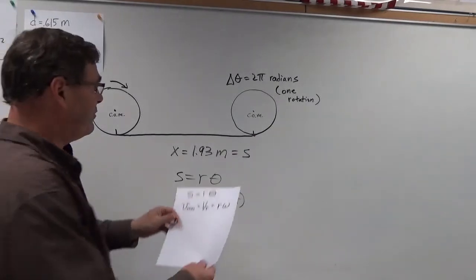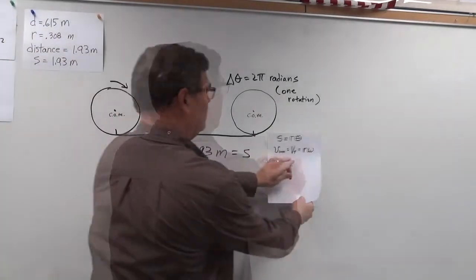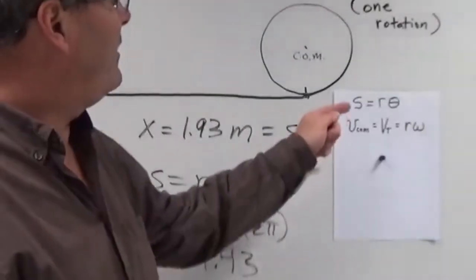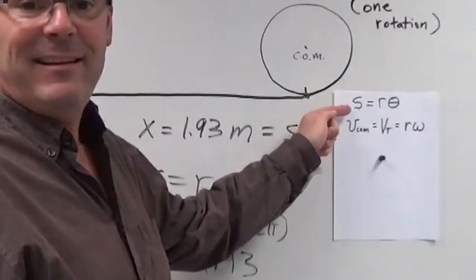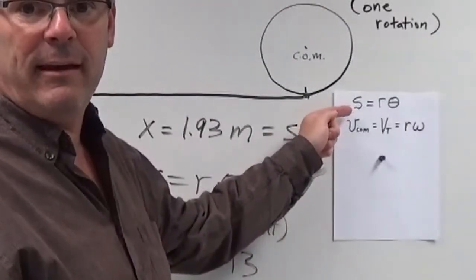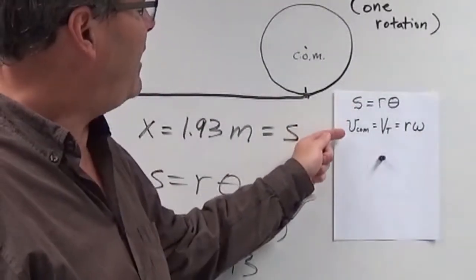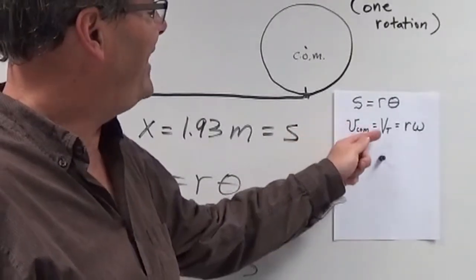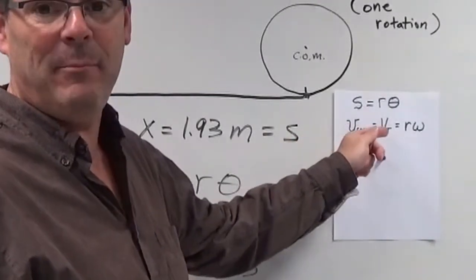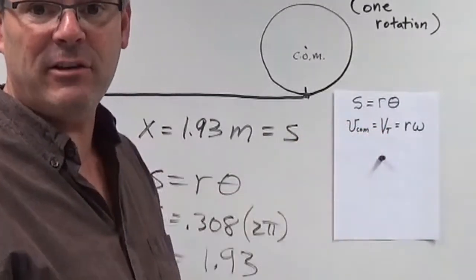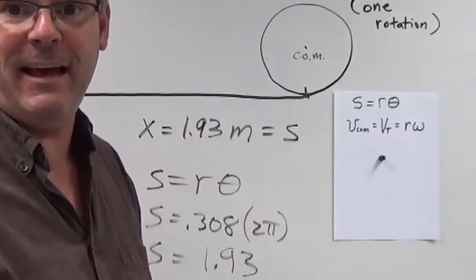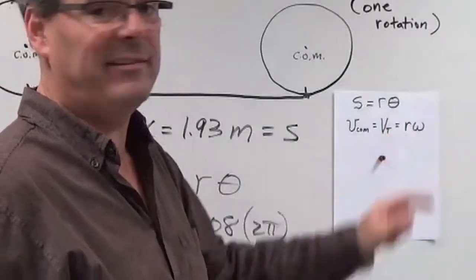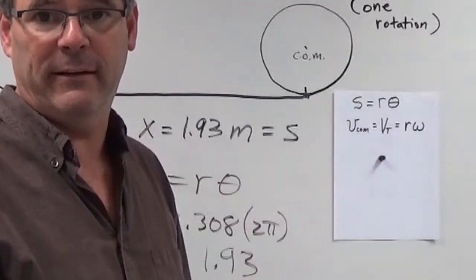Here's what we've got so far: S equals r times theta, and the velocity of the center of mass is the same value as the tangential velocity at the edge of the wheel, which of course equals r times omega.